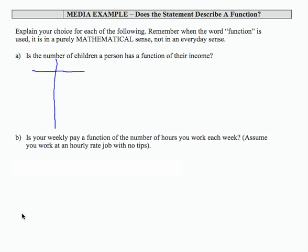In each situation it's important to understand what the input is and what the output is. Is the number of children a person has a function of their income? So income would be the input and number of children that they have in their family would be the output.